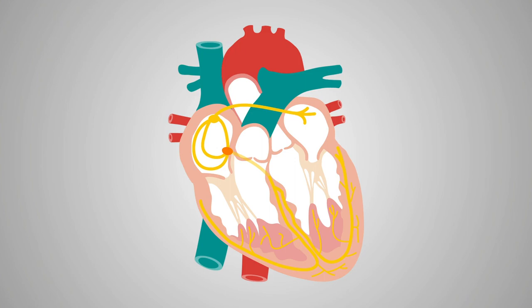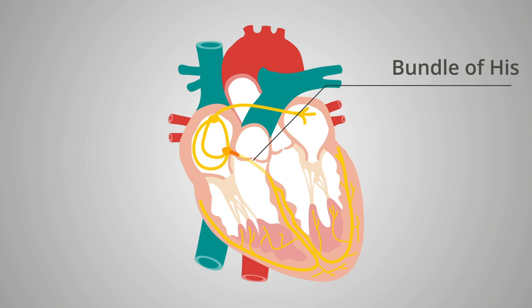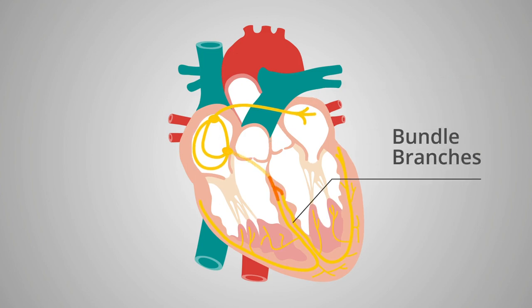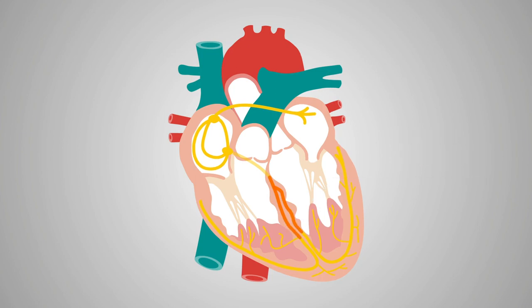From here, the impulse travels through the bundle of His, a specialized group of cells located in the septum, which then divides into the right and left bundle branches. This results in septal depolarization and the beginning of ventricular depolarization.